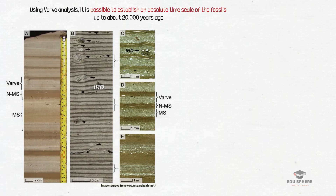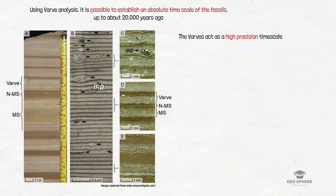Varve chronology is created by matching the patterns in the varve and the thickness of varve sequences from around the region. The advantage that varves have over other sediments is that they have tremendous precision of a year and in some cases down to the level of seasonal layers within a year.